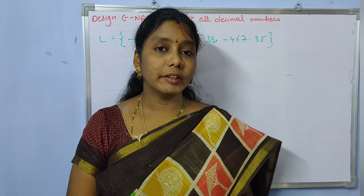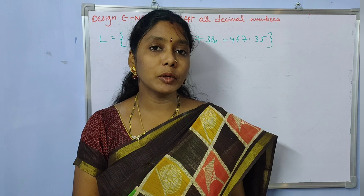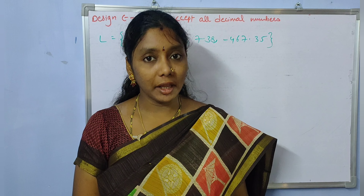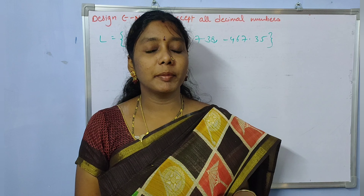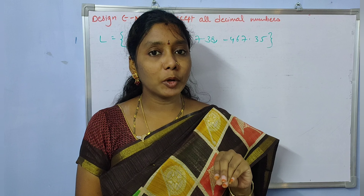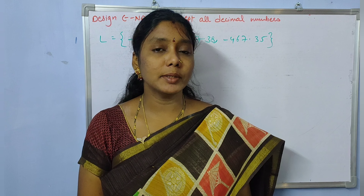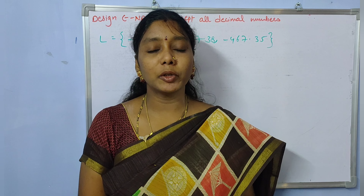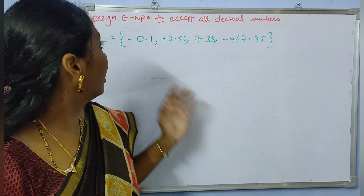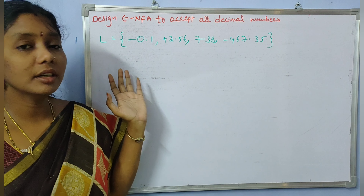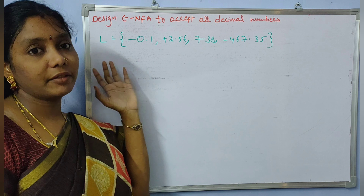Hi, welcome back. In this video I am going to explain an example of the epsilon-NFA for the problem of decimal numbers — that means it should accept all kinds of decimal numbers. For that problem we need to consider the epsilon-NFA. Let us consider the language first.